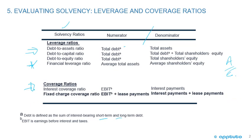Now we're getting into some coverage ratios. The interest coverage ratio should be easy to remember — it's just EBIT over interest. Remembering from the income statement, we have earnings before interest and taxes, and then minus interest, so the numerator and denominator are in place. You just take EBIT and divide it by interest.